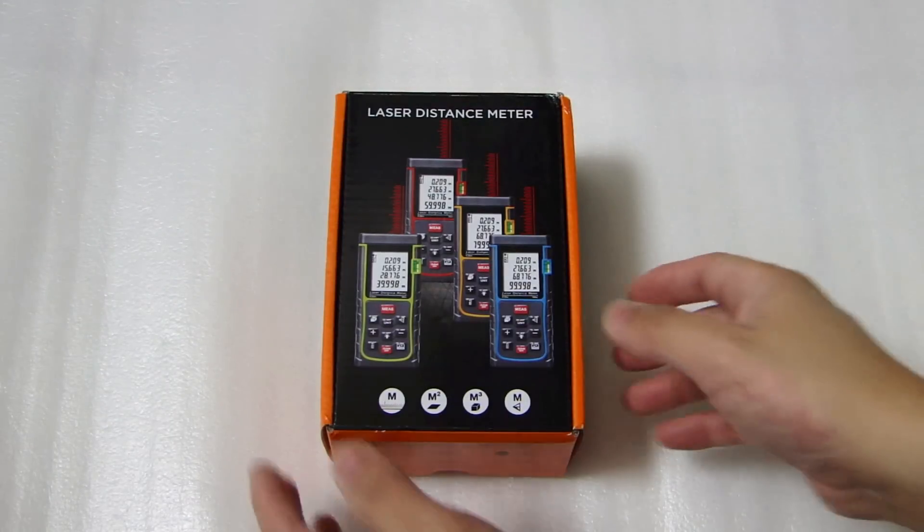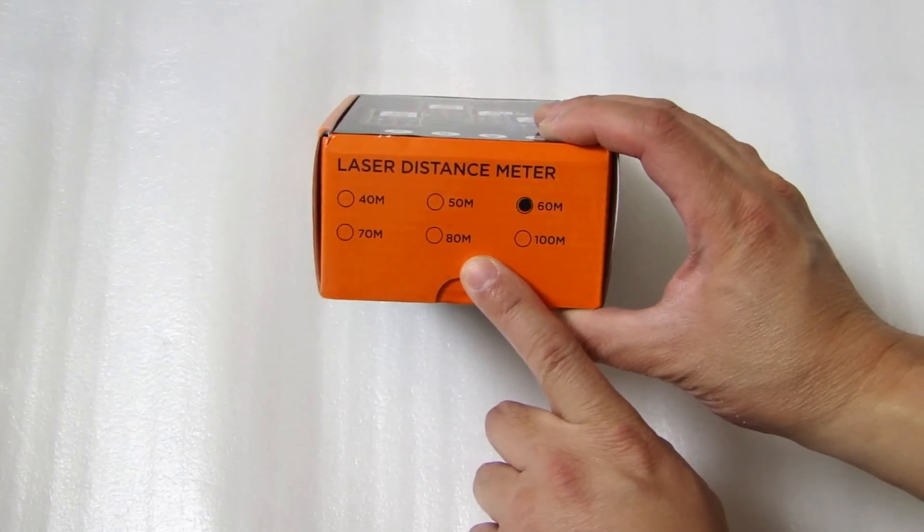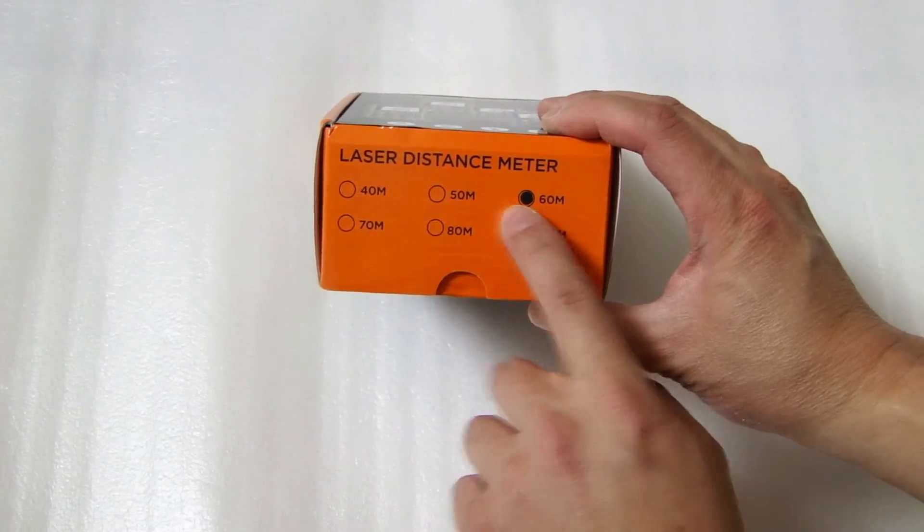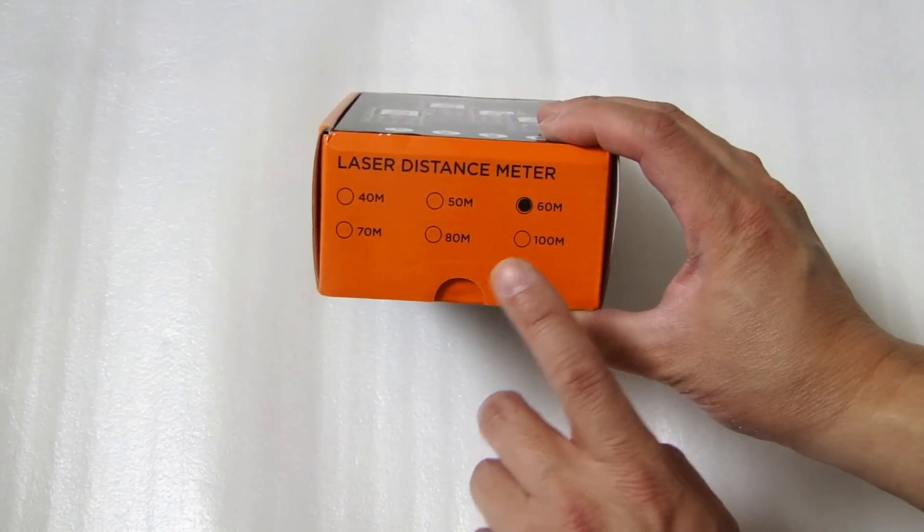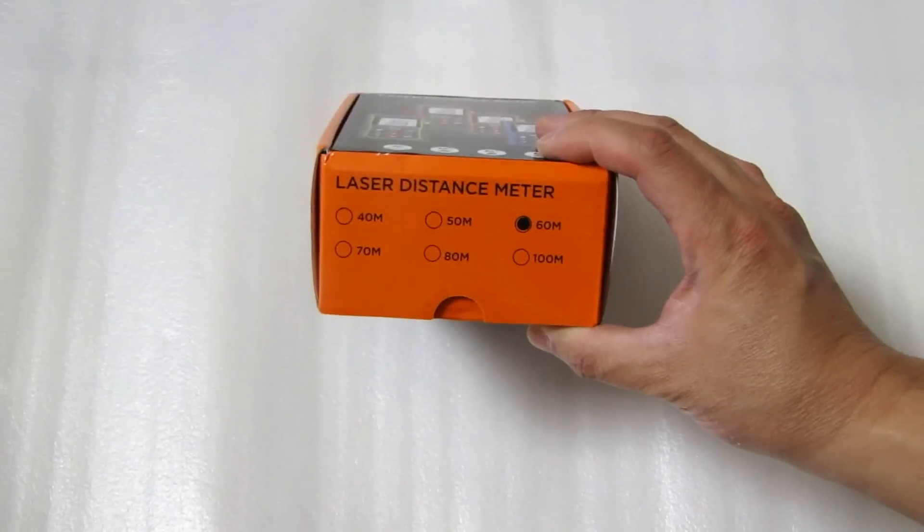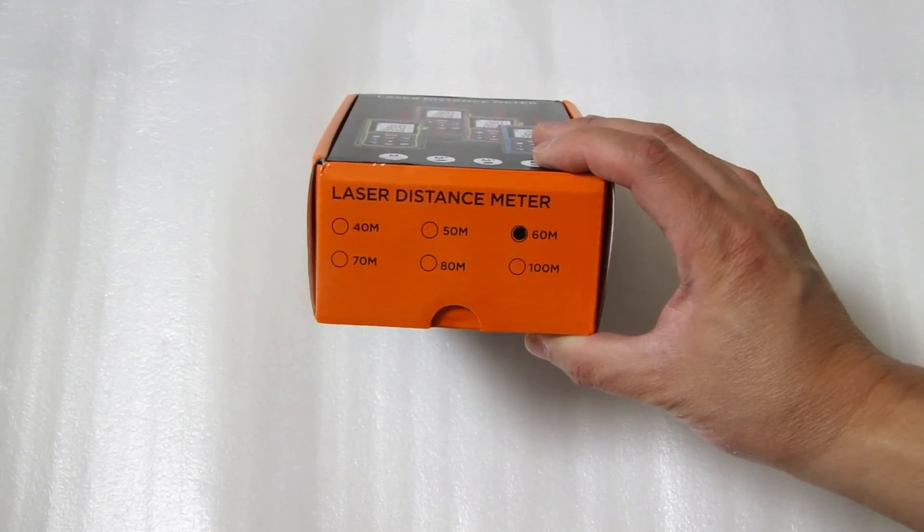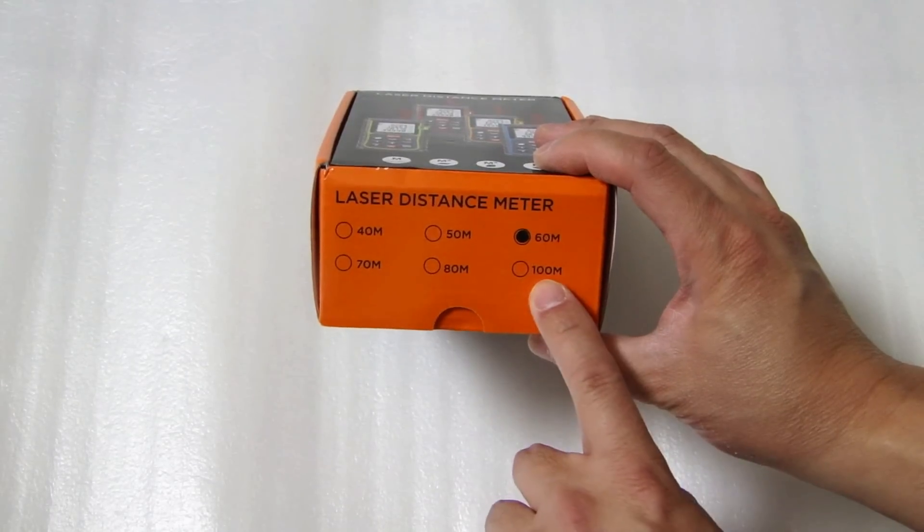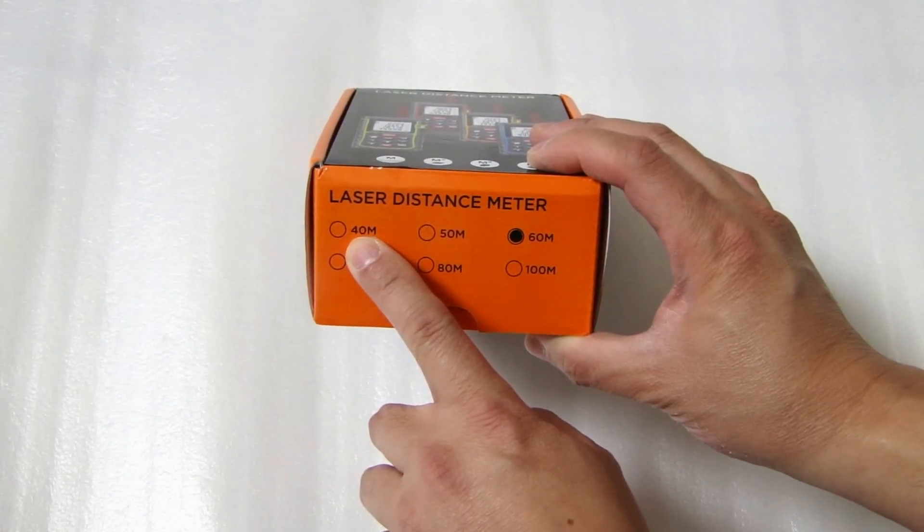So let's have a quick look around the box. On this side you see that it lists several distances: 40 meter, 50 meter, 60 meter, 70 meter, 80 meter, 100 meter. When you buy this meter you do have to specify the distance or what's the maximum distance you want to measure. With a longer distance you do have to pay a bit more money compared to the shortest one which is 40 meter.